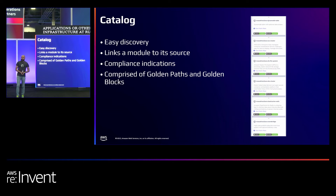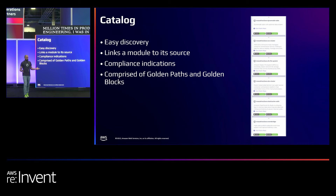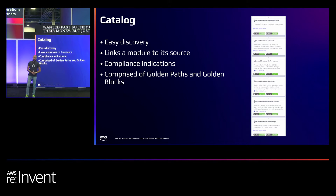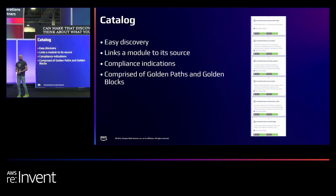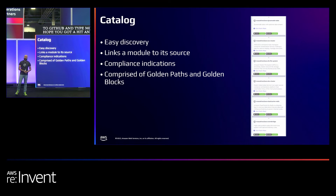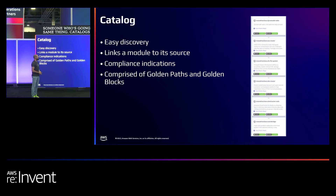Now let's talk about what to do now that we have blocks — we need catalogs. We built this a million times in product engineering. With just a tiny bit of code and a database, we can capture all those blocks and make them discoverable. Think about what you have to do today to figure out what NoSQL databases are supported by your organization. You go to GitHub, type MongoDB, and hope you get a hit. If you didn't, you try DynamoDB, and just continue until you run out. Then you go talk to someone who does the same thing. Catalogs allow us to figure that out — at design time we know what our options are.